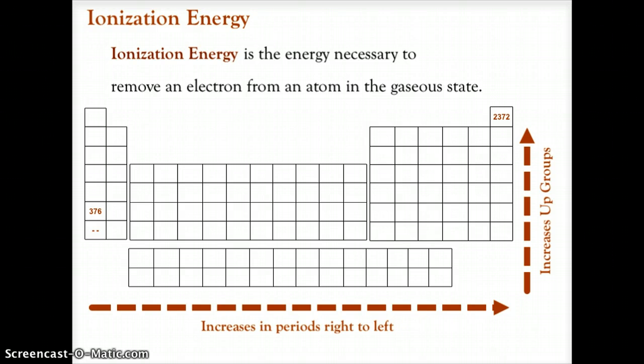The second energy trend or trend on the periodic table is ionization energy. And this is the energy necessary to remove an electron from an atom while it is in its gaseous state. Now what we're looking at here is what is the likelihood that this element wants to remove an electron. And the less likely it is to remove an electron, the more energy it would take to take that electron off. And when we've looked at this, if you're looking at one of the noble gases, and helium being the smallest of the noble gases, it does not want to give up electrons.